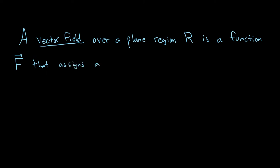which we can call F of x, y, to each point x, y in our plane region R. Likewise, you can define a vector field over a solid region Q in space — it's the same thing, except it assigns a vector in space to an ordered triple. So you can add another dimension, and nothing changes.